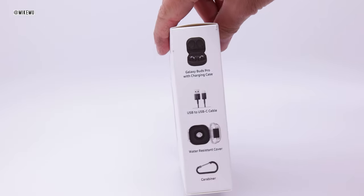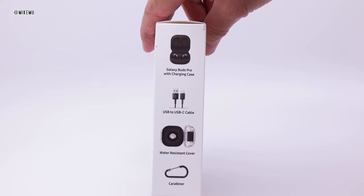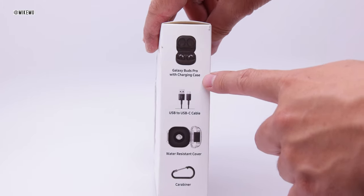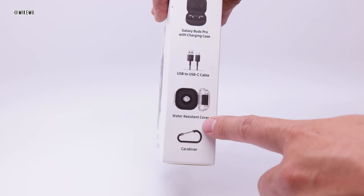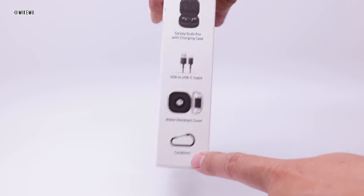This is, of course, the black version. They only come in black in the warehouse. It comes with a Galaxy Pro with charging case, USB to USB-C cable, water-resistant cover, and a cheap little carabiner.